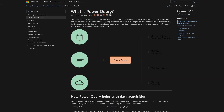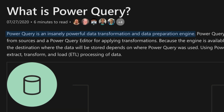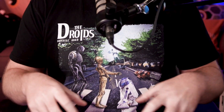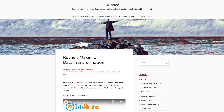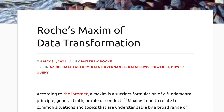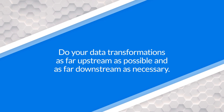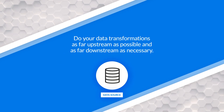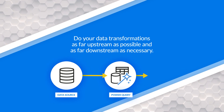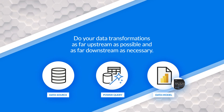Power Query has a ton of power inside for data transformations and doing crazy things to help get your data in the shape that you need it. Before I get into the resources available for you to learn more, I want to start off with a maxim that Matthew Roach came up with. This is the concept of where to do your data transformations: you should do them as far upstream as possible and as far downstream as necessary. Push as much back to the data source that you can. Power Query would be the next logical step, and then if you have to, do it in the data model and in DAX. With that in mind, let's go through different resources that are available for you.